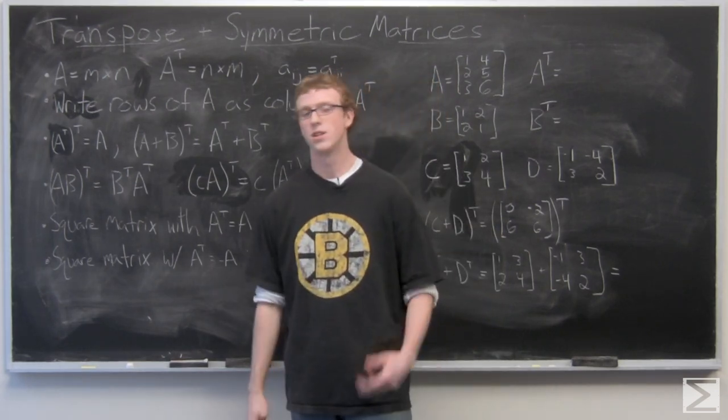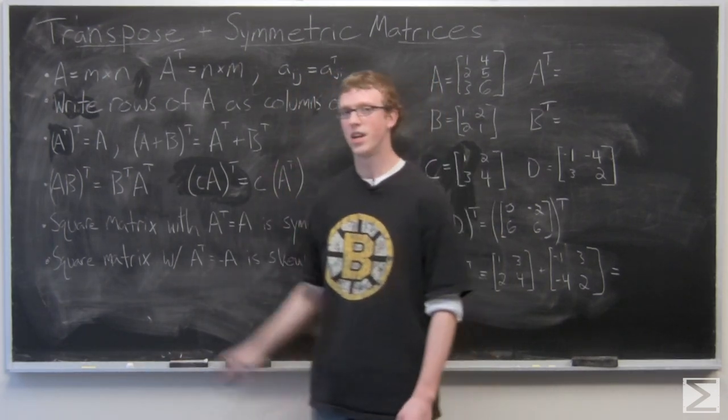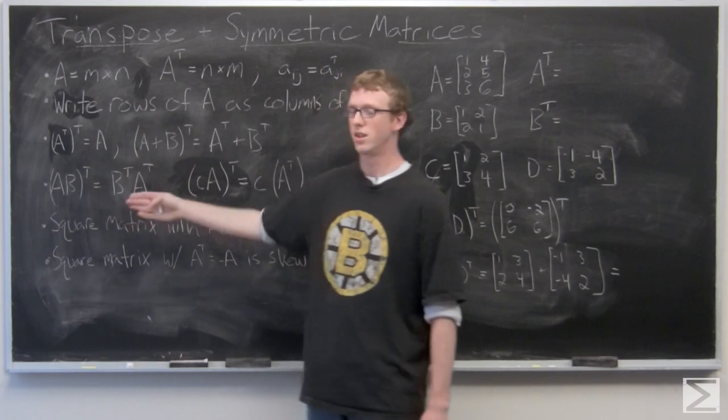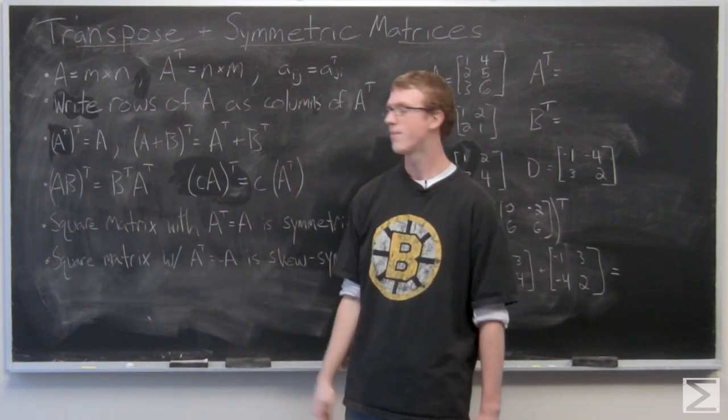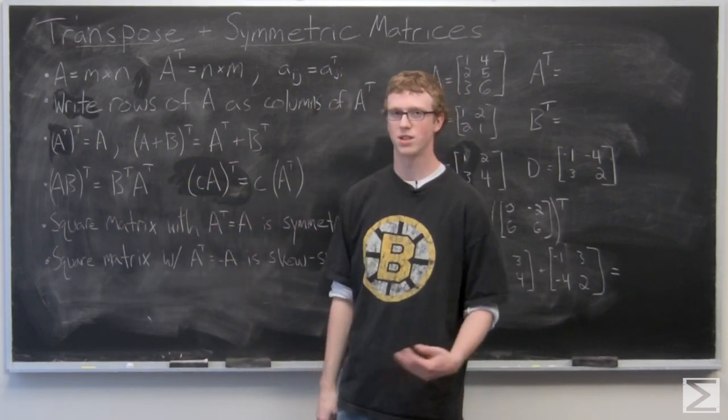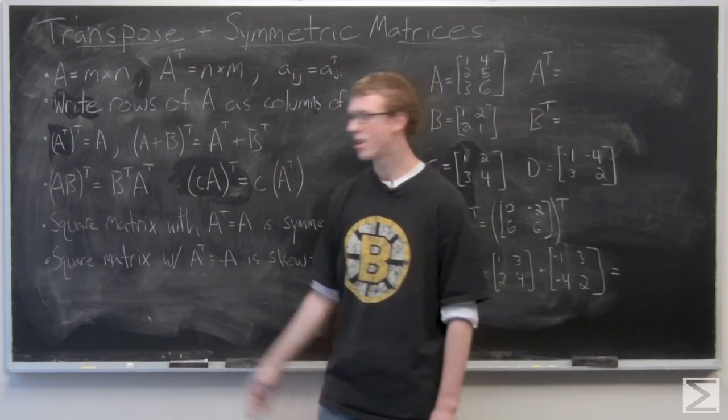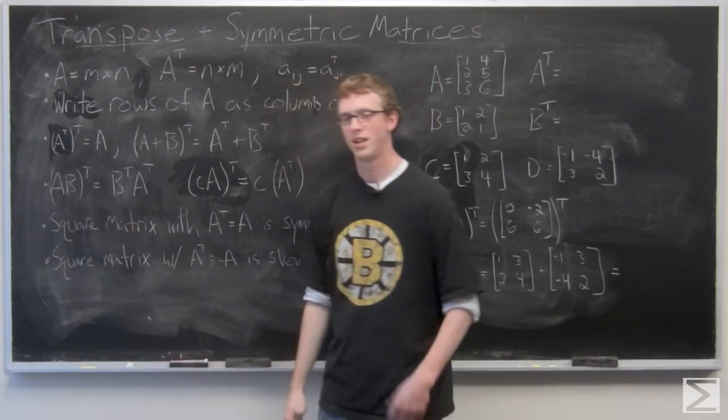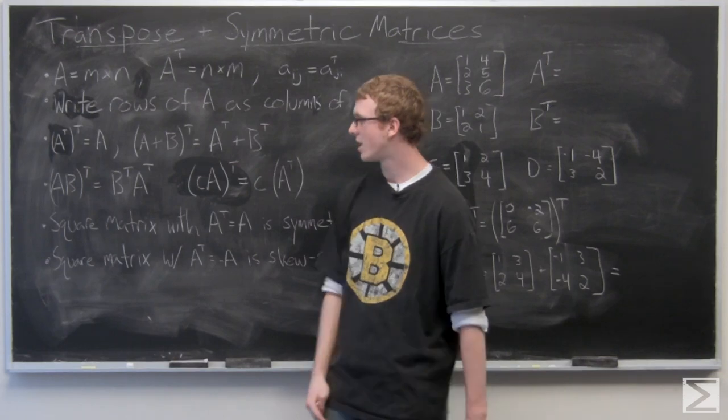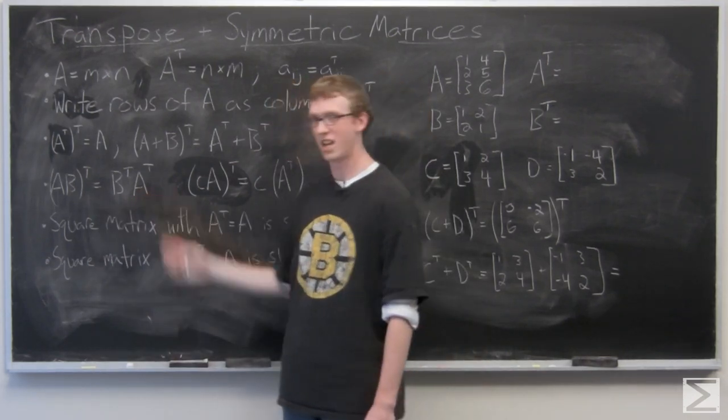There are some important properties of transpose. A transpose transpose is just going to be the original matrix A. A plus B transpose is going to be A transpose plus B transpose. AB transpose is going to switch the order of multiplication and be B transpose times A transpose.